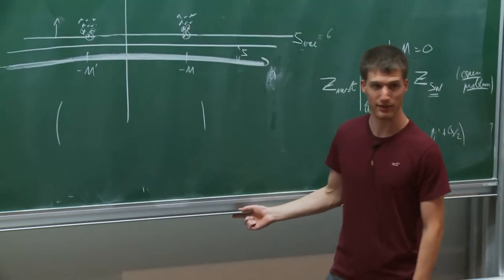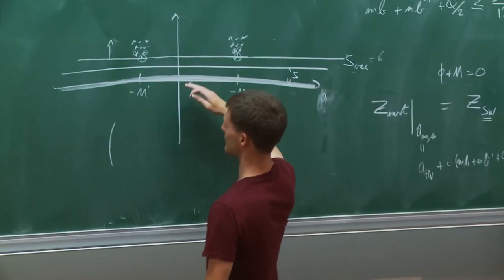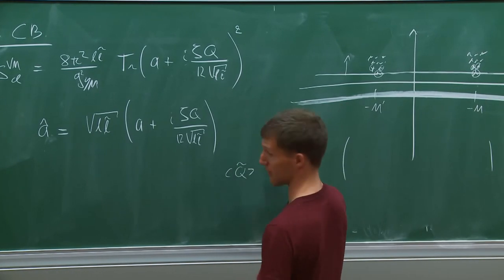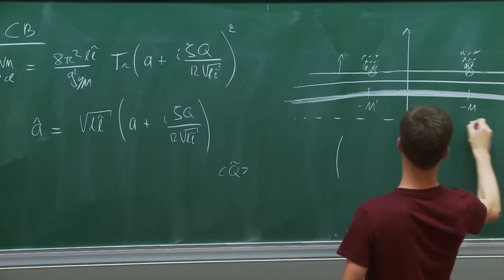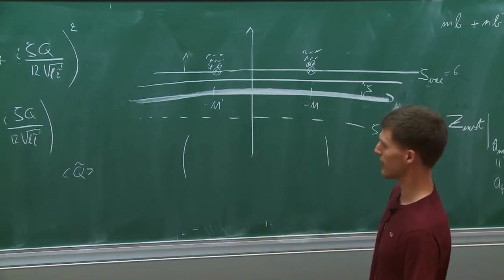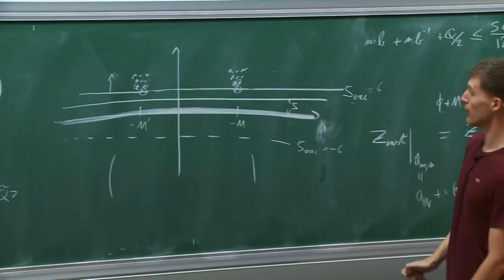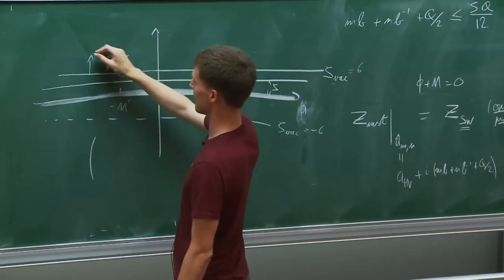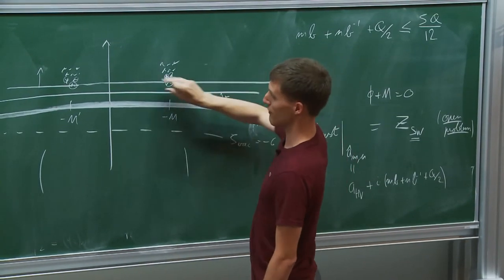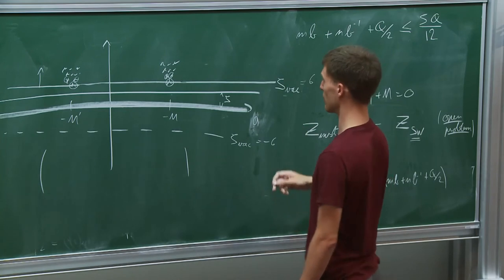When zeta is negative essentially all the same words go through but instead of giving q a VEV we start giving q-tilde a VEV. There is a similar threshold at zeta_vac equals minus six and then the same story follows.